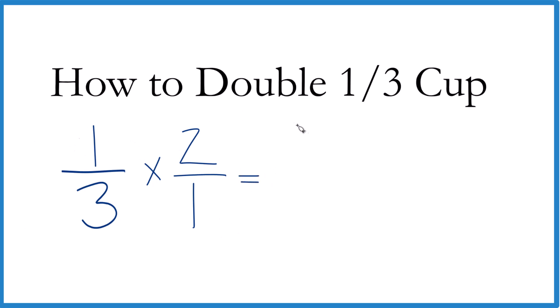So we would take one times two, that gives us two, and three times one, that gives us three. And it ends up that when we double one-third cup, we get two-thirds of a cup. That's it. That's our answer.